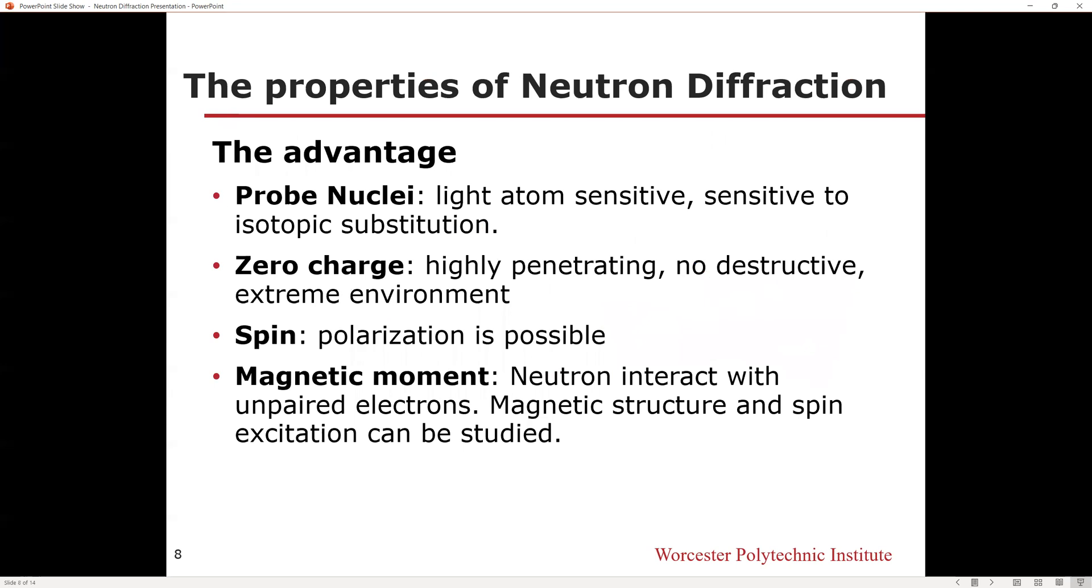Because of its properties, neutron diffraction has many advantages and disadvantages. For the advantages, first, the neutron can probe nuclei. Neutrons have more ability to scatter lighter elements and its isotopes than other diffraction techniques, which makes it sensitive to light atoms and isotopic substitution.